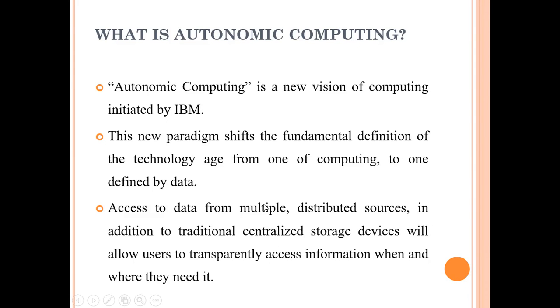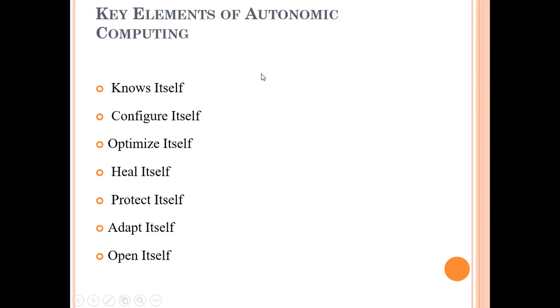The key elements of autonomic computing—as the name suggests, autonomic means by itself—it knows by itself, it configures, optimizes, heals, protects, adapts, and opens itself. Most things are done automatically without the intervention of the user or without the user knowing much.